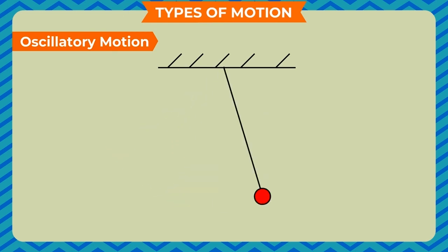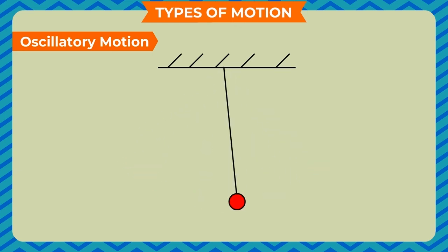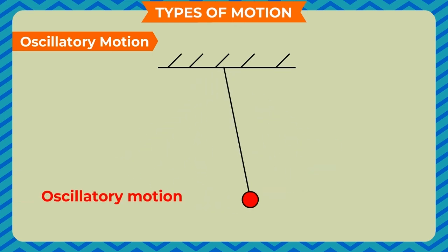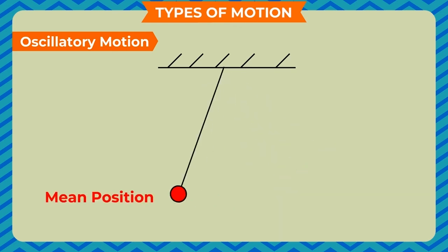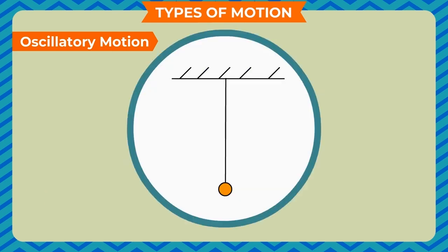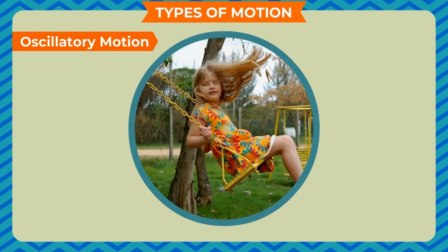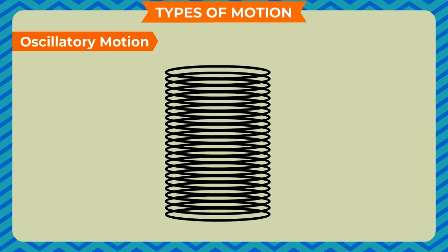Oscillatory motion: the repetitive motion of an object in which the object moves to and fro from its mean position is called oscillatory motion. In this motion, the object passes through its mean position after a fixed interval of time. Examples include the motion of a simple pendulum, motion of a swing, and vibrations of a spring. All oscillatory motion is periodic, but all periodic motion is not oscillatory. For example, the motion of the earth around the sun is periodic but not oscillatory.